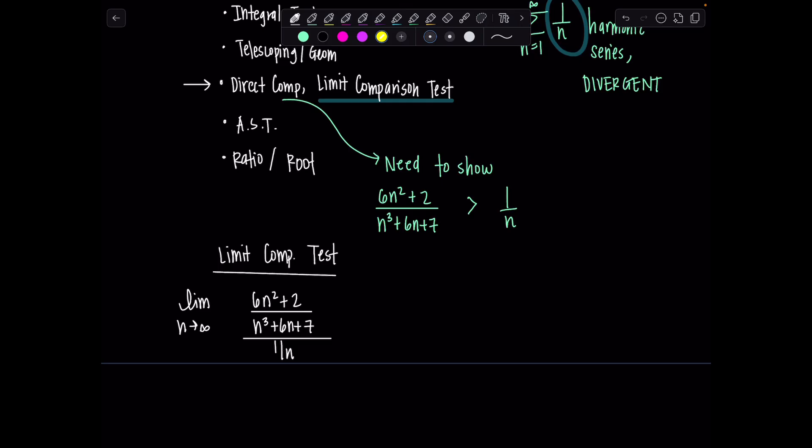So first things first, that 1 over n, the n will flip up to the numerator and I'm going to multiply now 6n squared plus 2 by n. So I'll have 6n cubed plus 2n over n cubed plus 6n plus 7. As n goes to infinity, terms of the numerator go to infinity. Terms of the denominator go to infinity. No, no, no, no. L'Hopital's rule.